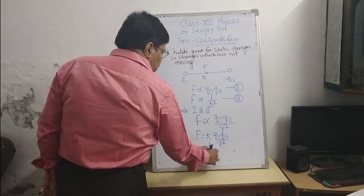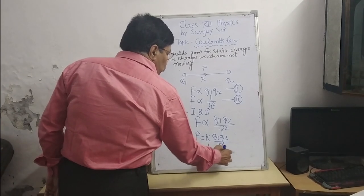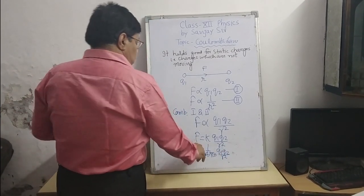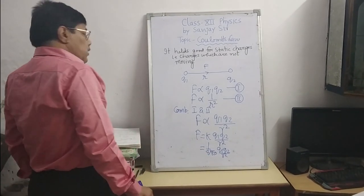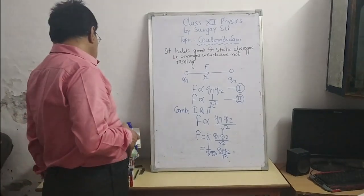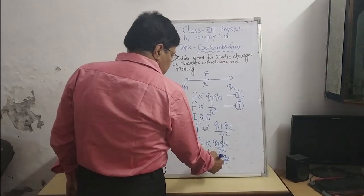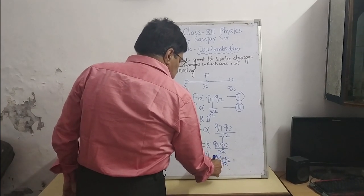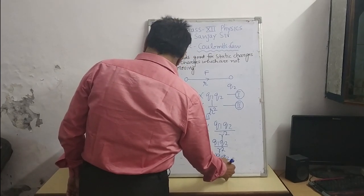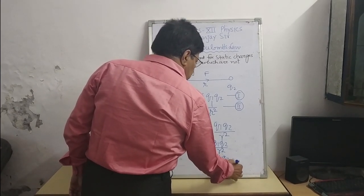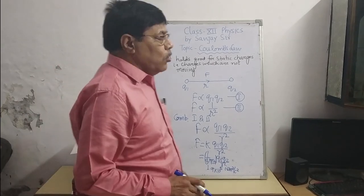The value of K is 1 upon 4 pi epsilon naught, so F equals 1 upon 4 pi epsilon naught times Q1 Q2 upon R square. The value of 1 upon 4 pi epsilon naught is 9 into 10 to the power 9 Nm square upon C square. Epsilon naught is the permittivity of free space. So this is called Coulomb's law.